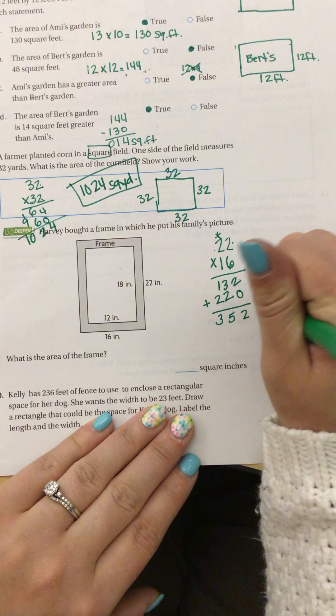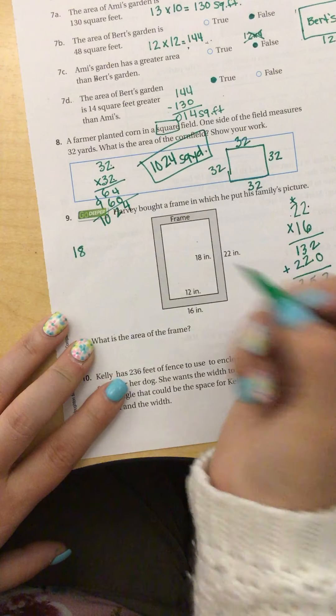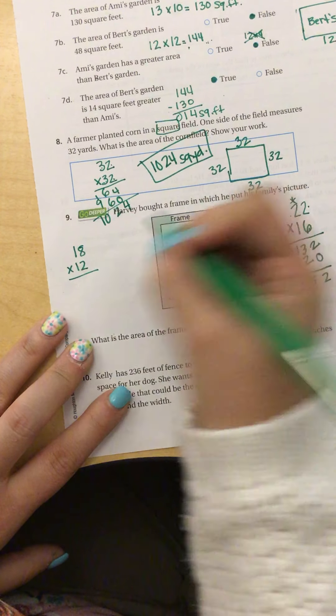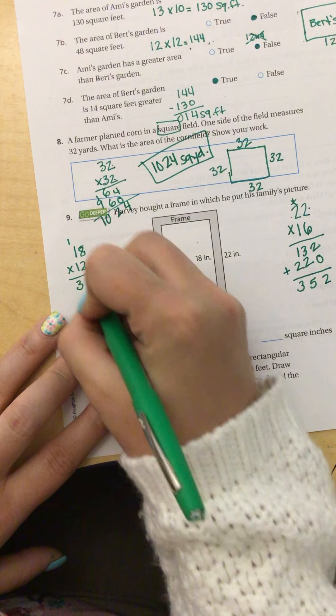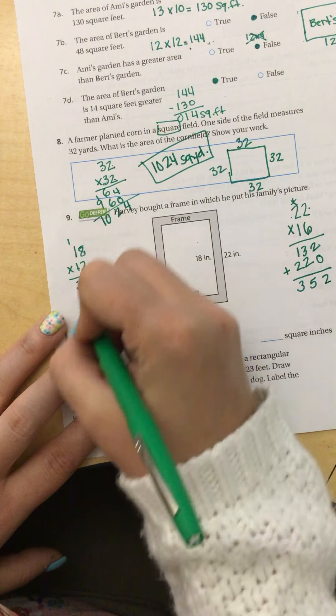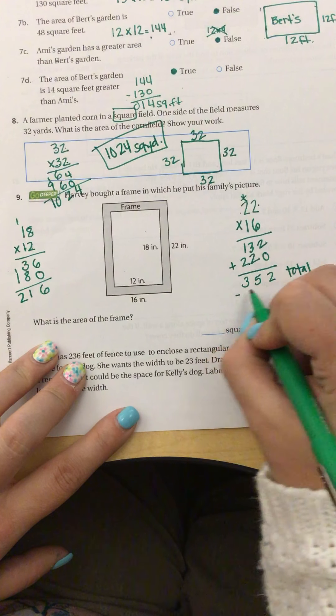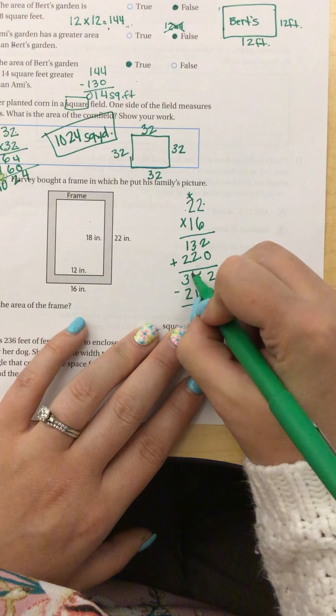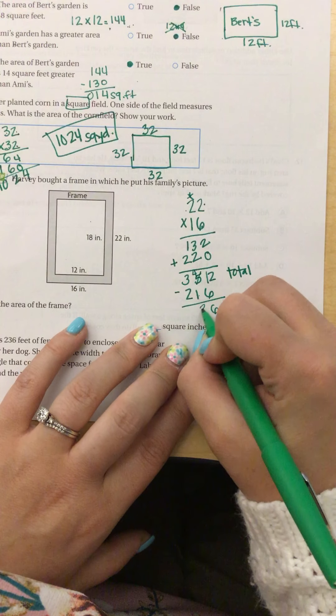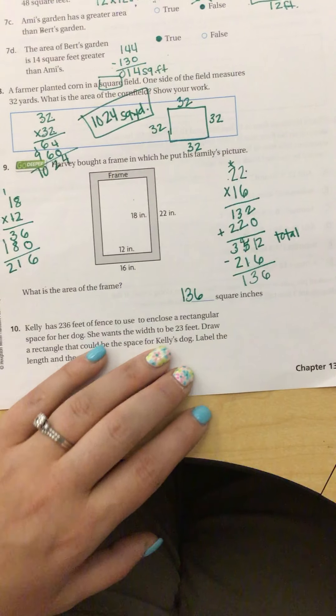So that's for the total. And then if I find the area of my picture, 18 by 12, 2 times 8 is 16, 2 times 1 is 2 plus 1 is 3. Add my 0. 1 times 8 is 8, 1 times 1 is 1. When I add those together, 8 plus 3 is 11, I get 216. And I want to know just the frame. So I'm going to subtract my 216 from my 352. And I have to borrow. 12 minus 6 is 6, 4 minus 1 is 3, 3 minus 2 is 1. So that means the area of the frame is 136 square inches.